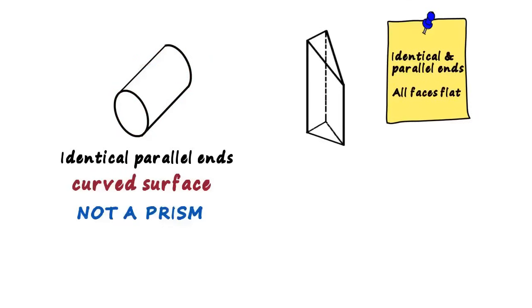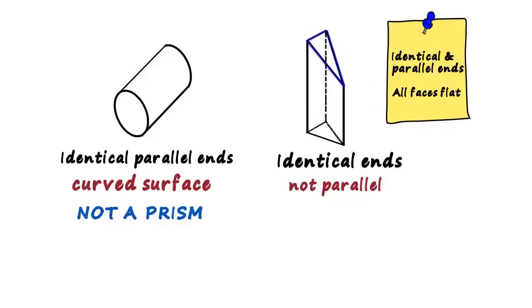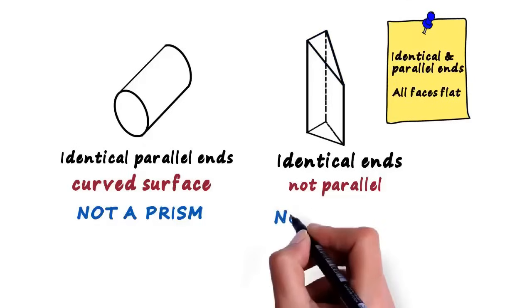Here's another figure. First we look at the ends. Both are triangles and hence we can say that this figure has identical ends. But wait, they are not parallel. The upper triangle is slightly tilted. So this figure as well is not a prism.